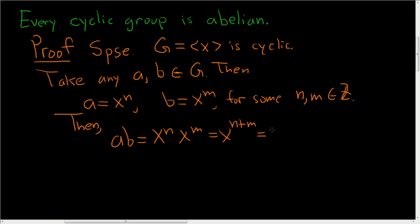Addition is a commutative operation on the set of integers, so this is x to the m plus n, and again we can write this as x to the m x to the n.